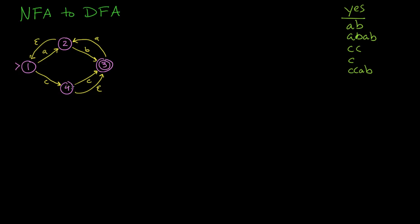We can do CCAB. We can do something like CCA and then jump through this epsilon to state number one and then do CC again, so CCACC — that one will work. And we can do CCA, jump through epsilon and then C and then jump through epsilon again, so CCAC — that'll work. And the last one is ABACAB — that'll work as well.